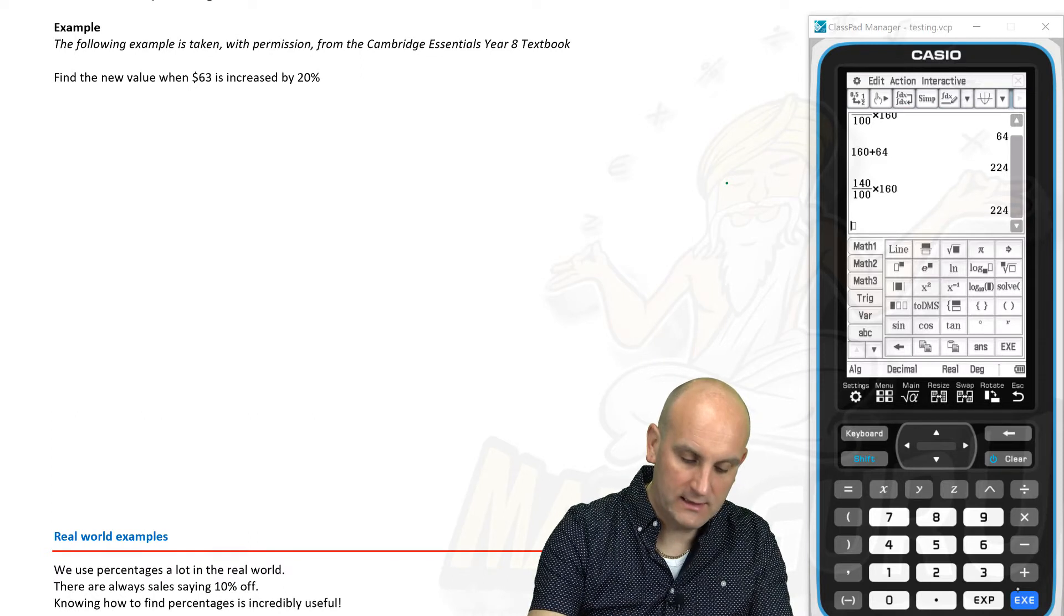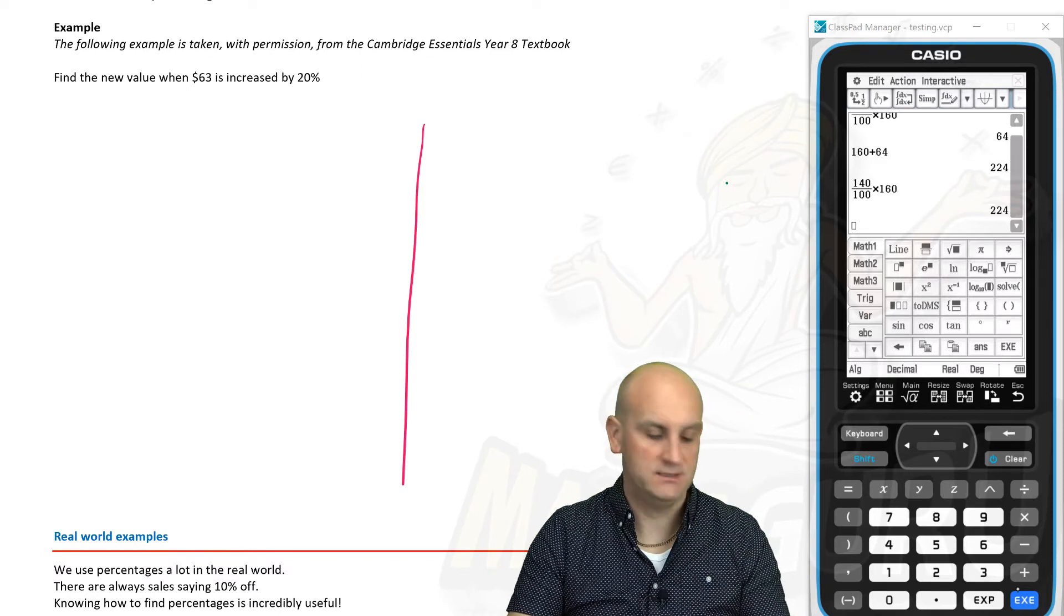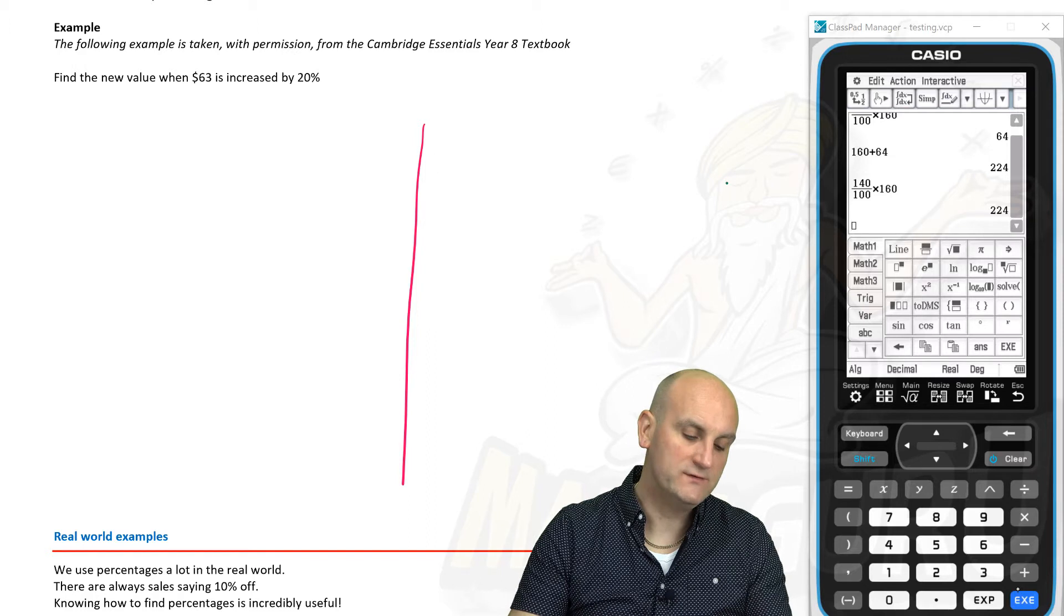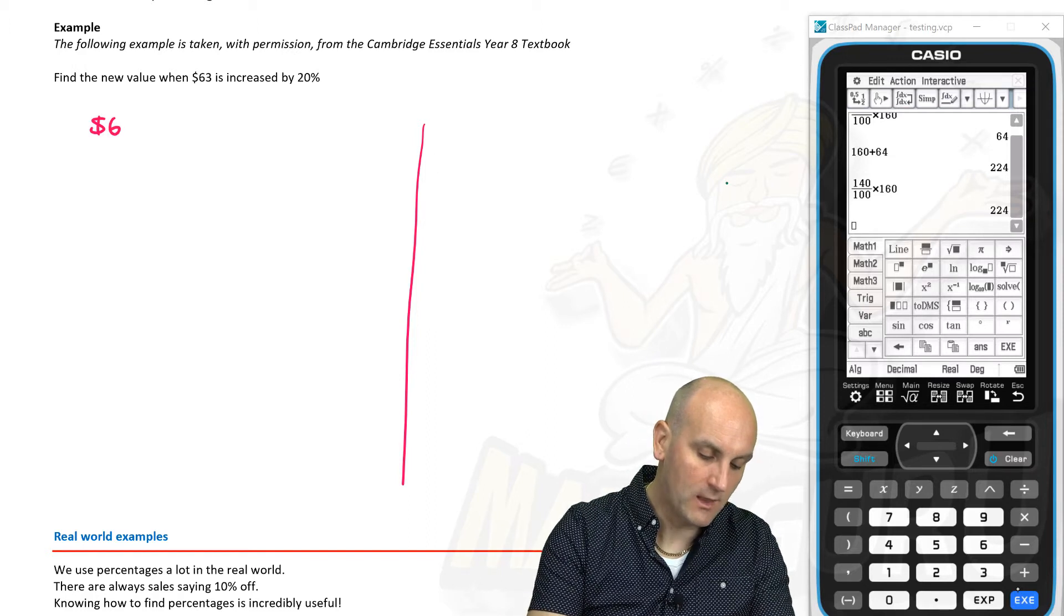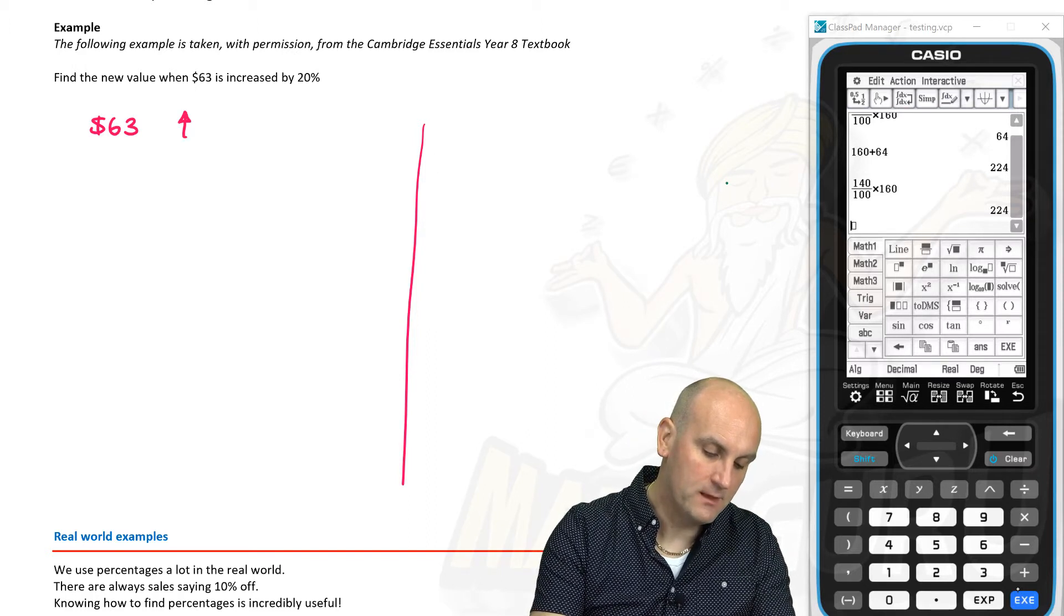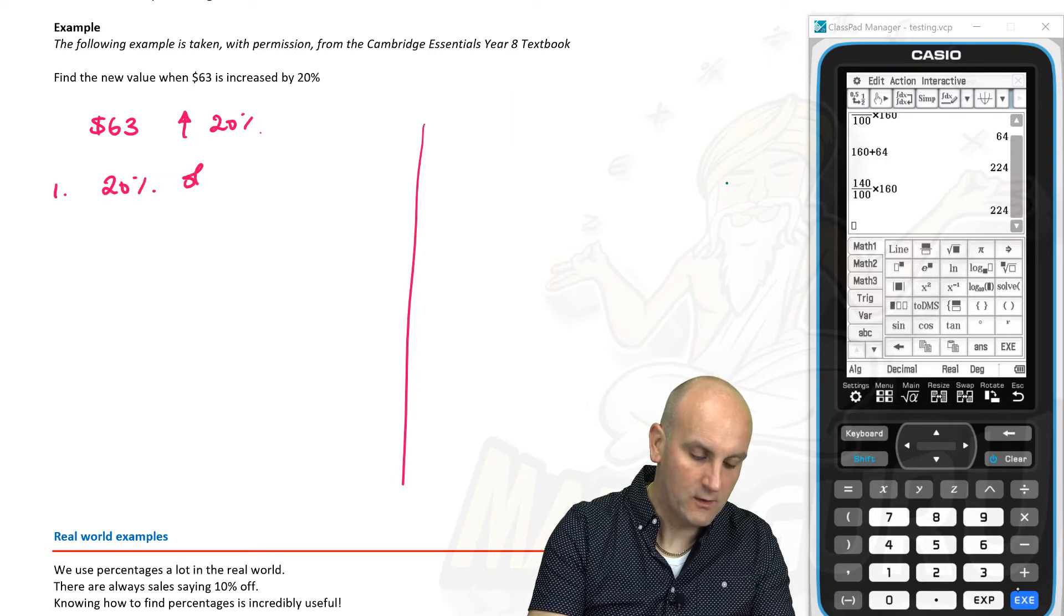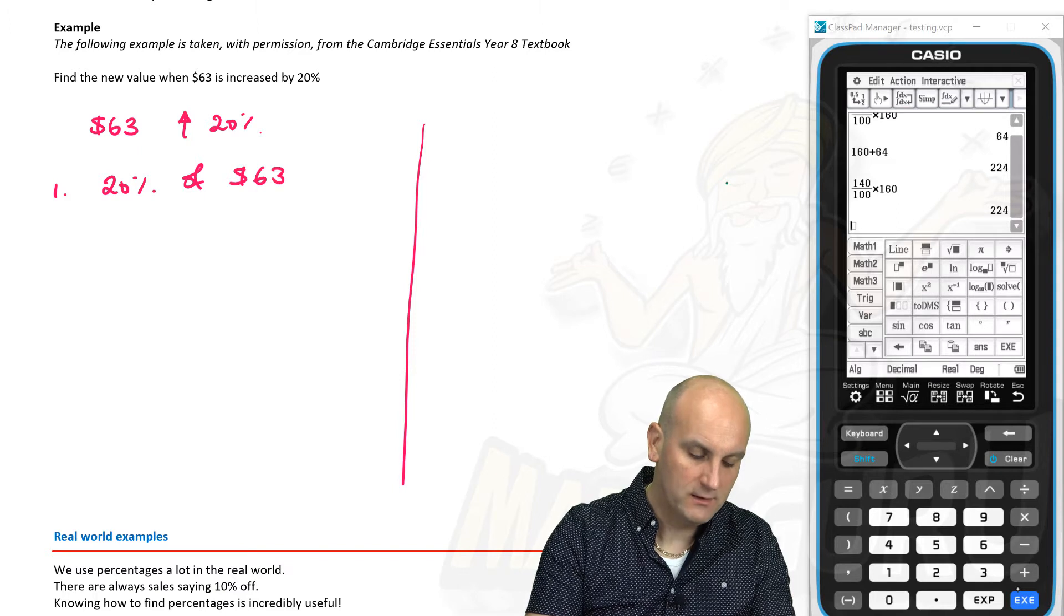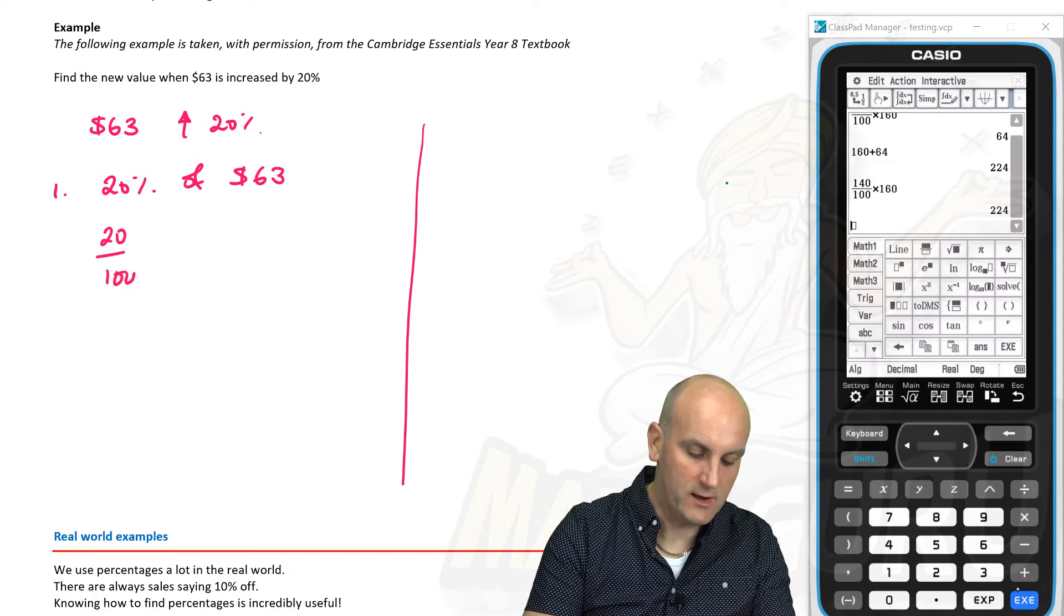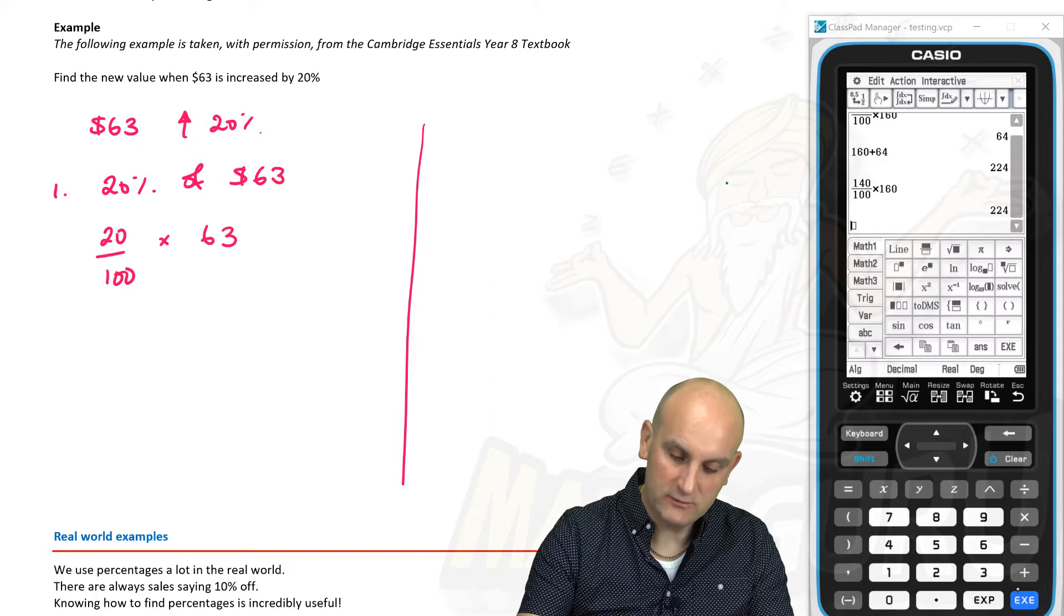Here's another example. Let's do it side by side. I'm going to do a line down here and we're going to do each method side by side. Find the new value of $63 when it's increased by 20%. So the first method says, find 20% of $63.